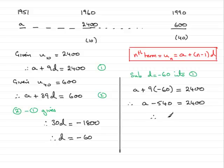Add 540 to both sides and what you have is A equals 2,940. 2,940 then for A.